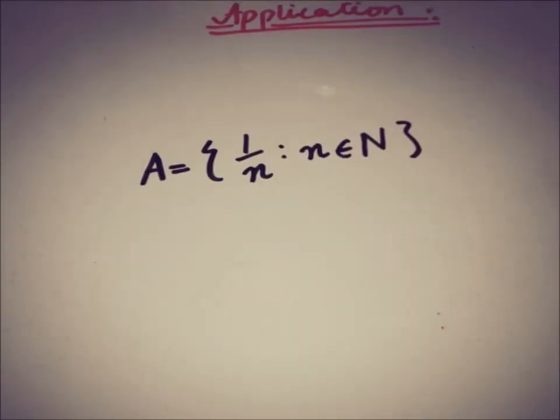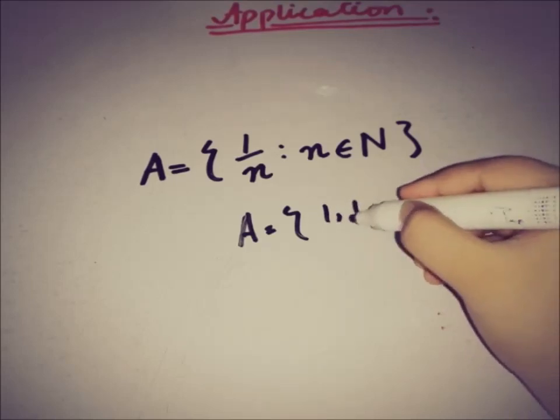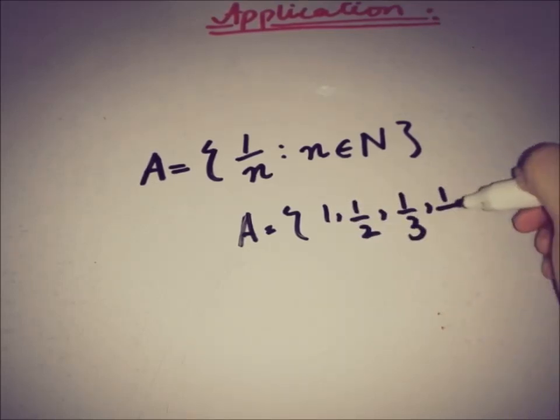The application of the Archimedean property we will discuss today is in the case of infimum or supremum. We will apply it to a specific and very important set. The set A is defined as having elements of the form 1/n, where n belongs to the natural numbers, so A = {1, 1/2, 1/3, 1/4, ..., 1/n, ...}.